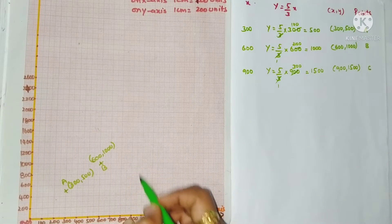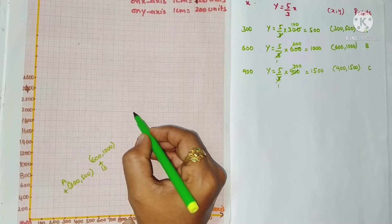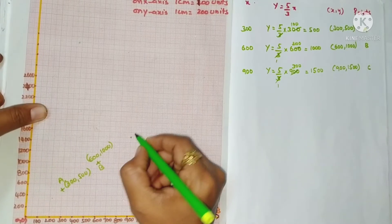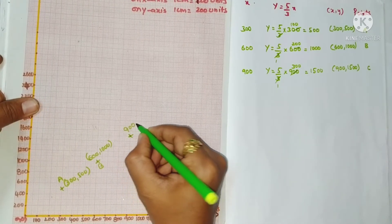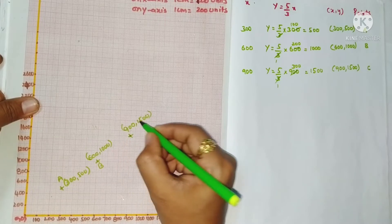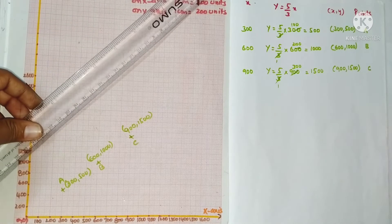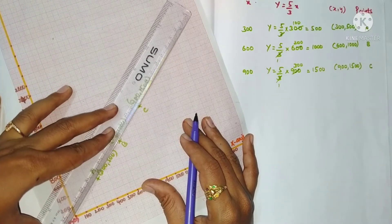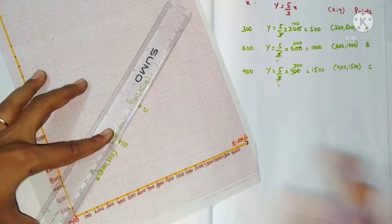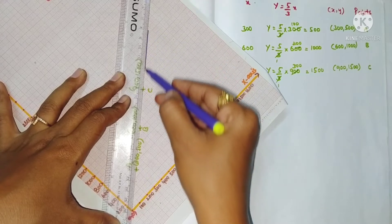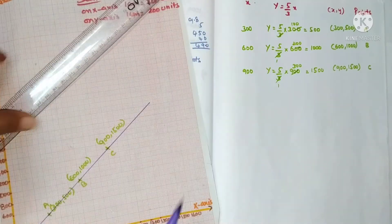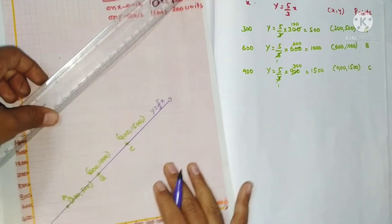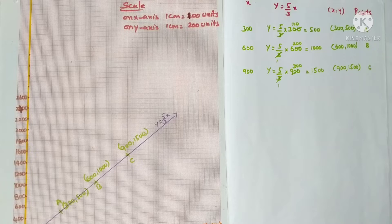Last point C: on the x-axis 900, on the y-axis 1500 — between 1400 and 1600. So (900, 1500) is point C. Now join these three points with a scale. Since it is of the form y = mx, the graph passes through the origin. This is the graph of y = 5x/3.